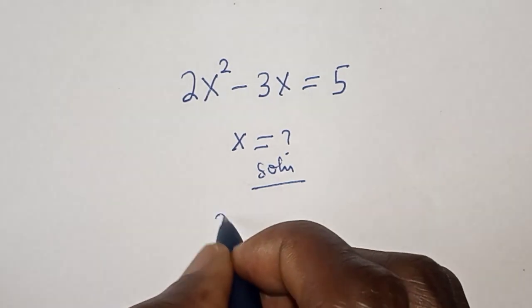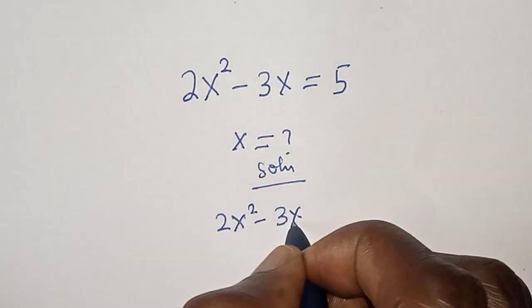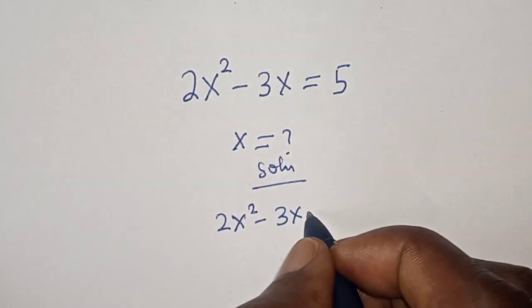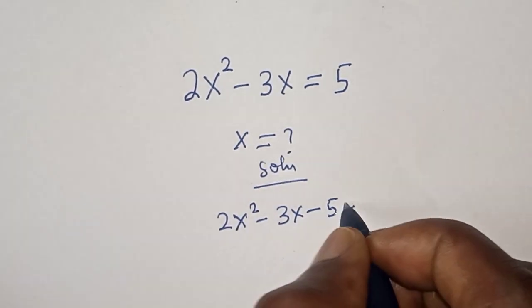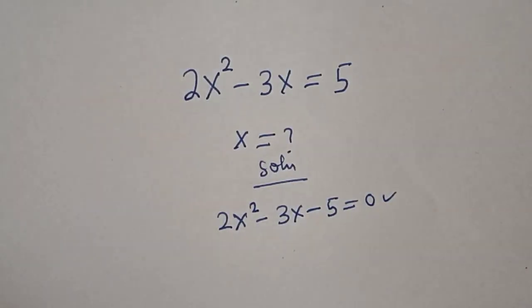We have 2x² - 3x. If 5 comes to this side, we get minus 5, so 2x² - 3x - 5 = 0. This is a quadratic equation. Let's solve using the factorization method.